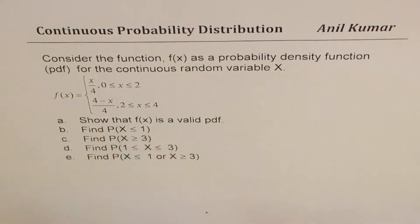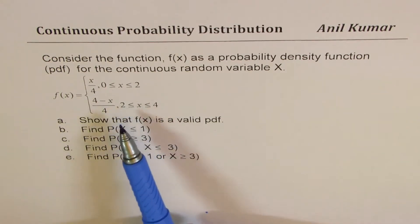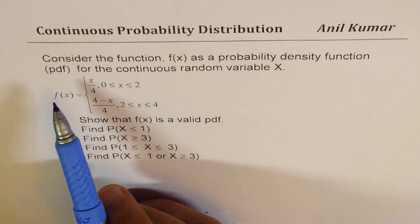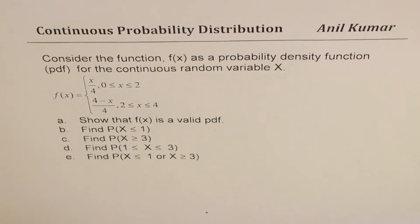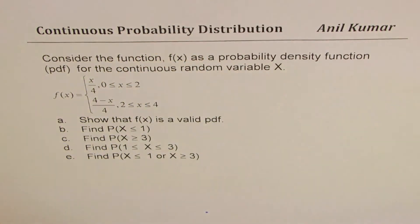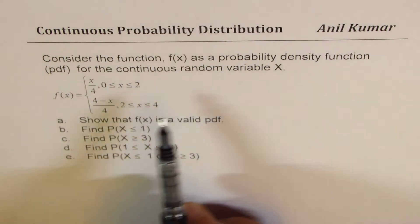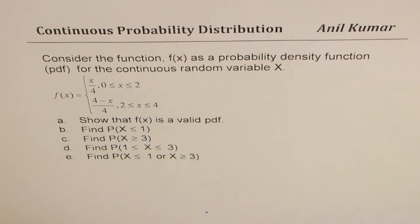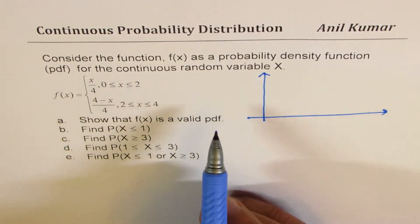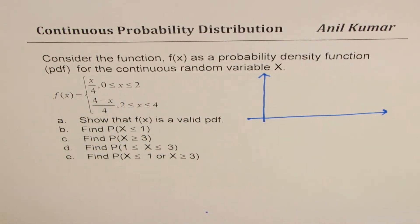You need to show that f(x) is a valid probability distribution function and find probability for different conditions. Since this question has been put up in one of my videos where I used integration to solve it, I'm going to solve this question without integration. The probability distribution function defines continuous probability distribution for any given random variable, and the probability that a random variable assumes a value between a and b is given by the area under the curve.